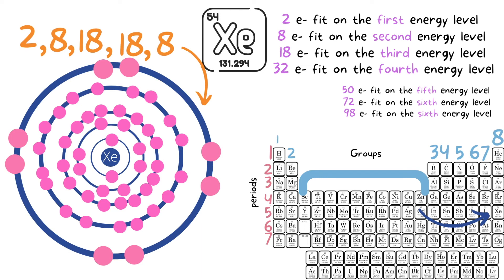So I just want to emphasize: if you were to fill up the fourth energy level with 26 electrons and not accommodate it, then the valence shell — that being the fifth energy level — would be totally incorrect. Because according to the periodic table, xenon should have five shells and eight electrons on that last shell.